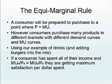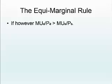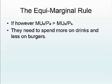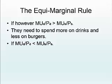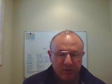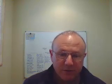The marginal utility per dollar spent for burgers and drinks will tend to equalize in the long run. You can also tell from this what a person will purchase first and next. If the marginal utility per dollar spent on drinks is higher than on burgers, the person is more likely to buy drinks. They need to spend more on drinks and less on burgers. If it's the other way around, they'll spend more on burgers. This will alternate depending on what part of the curve a person is on. That's an introduction to the equi-marginal rule — you'll need to look at another video and do some reading to understand it better.